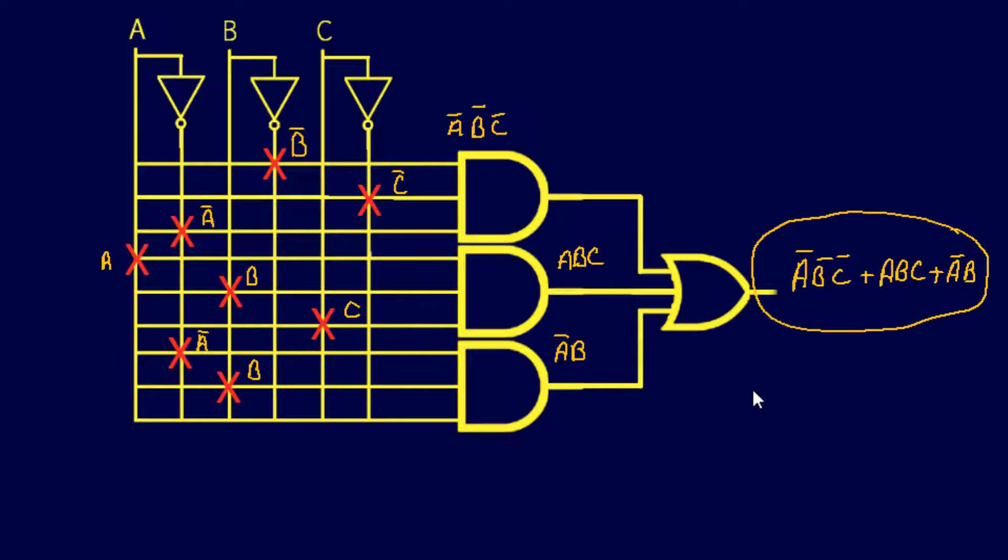And without trying to simplify it, that right there will be our final answer. So if you actually converted this into chips and using individual gates, you would have to use quite a few inverters and a few AND gates and OR gates versus just one PLD chip.